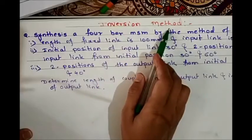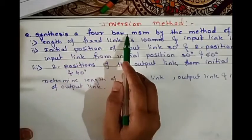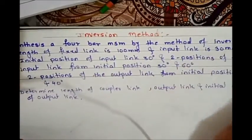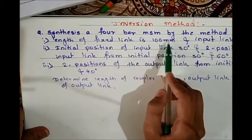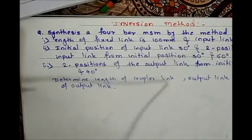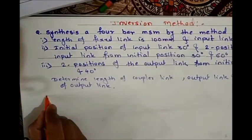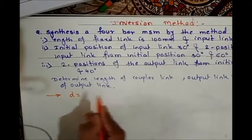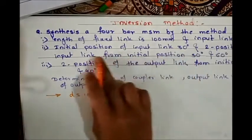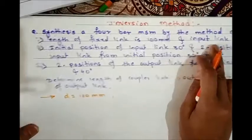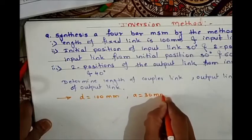Here we have the statement: synthesize a four-bar mechanism by the method of inversion. The data given is: length of fixed link D is equal to 100 mm. Then the input link length is 30 mm, so input link A is equal to 30 mm.